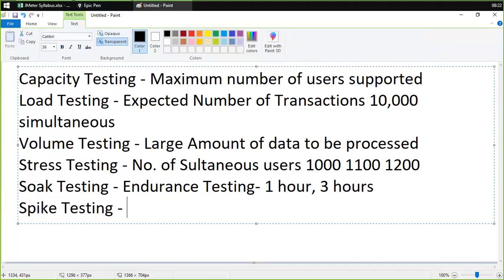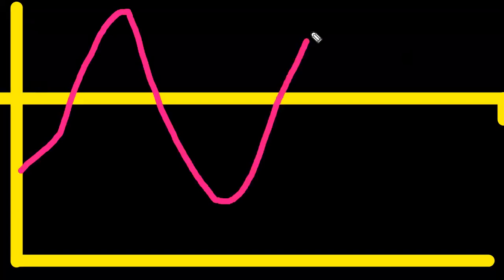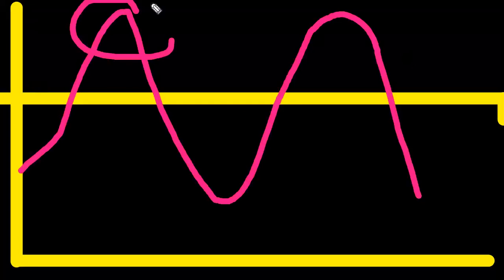The last type of testing is spike testing. Let me show you with the help of a graph. Suppose we have a graph where the yellow line is the normal load the application can bear. In spike testing, we increase the load and then decrease it, then increase it again and decrease it again — so the maximum load occurs at different times. Usually the load is less, but we check performance when the user load suddenly increases.